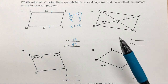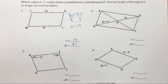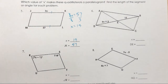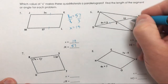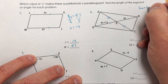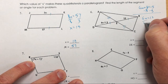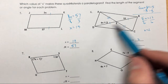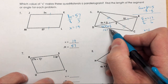Number six is focusing on diagonals. What we know is that diagonals bisect each other — they cut each other into two equal parts. So 6x plus 3 equals 15. Taking away 3 from both sides gives 6x equals 12, and dividing by 6 gives x equals 2. To find DE, since diagonals bisect each other, DE equals EB, which is 15. Plugging 2 back in: 6 times 2 plus 3 is 12 plus 3, which also equals 15.